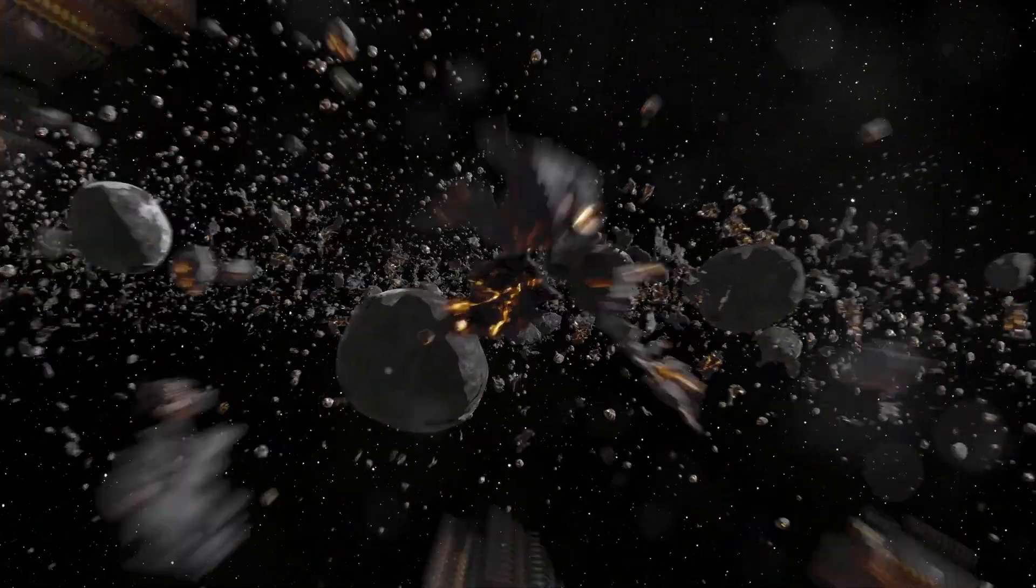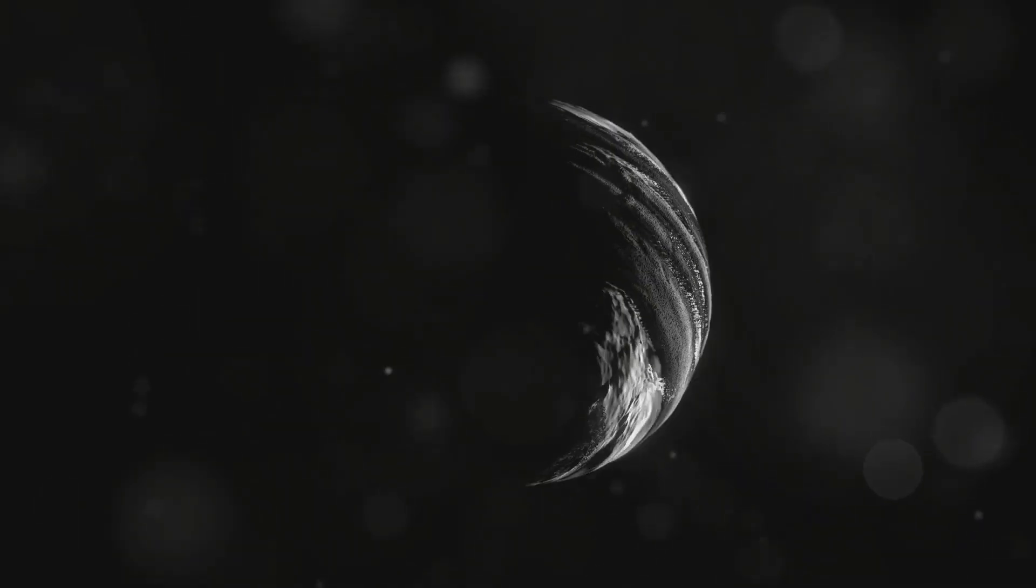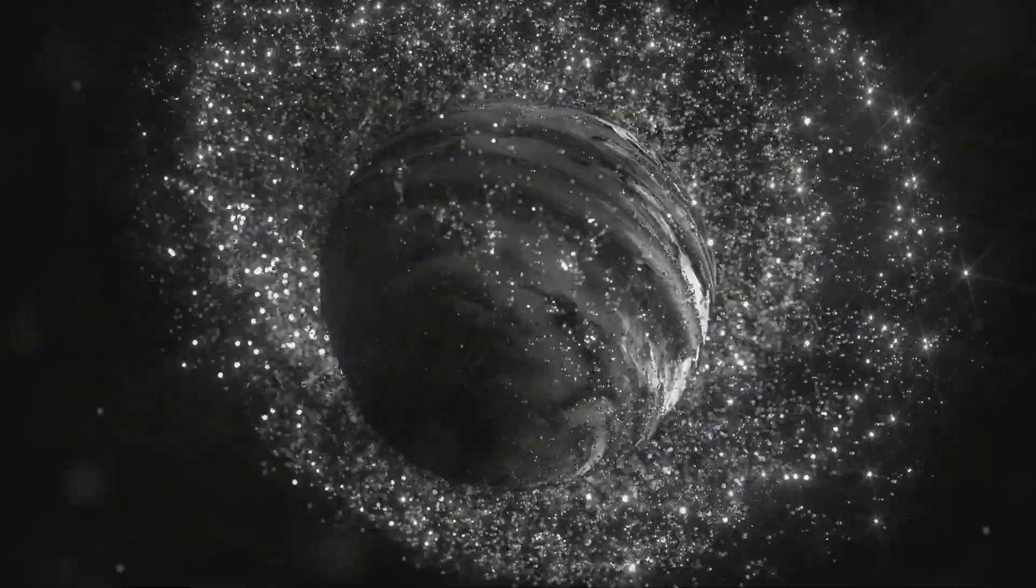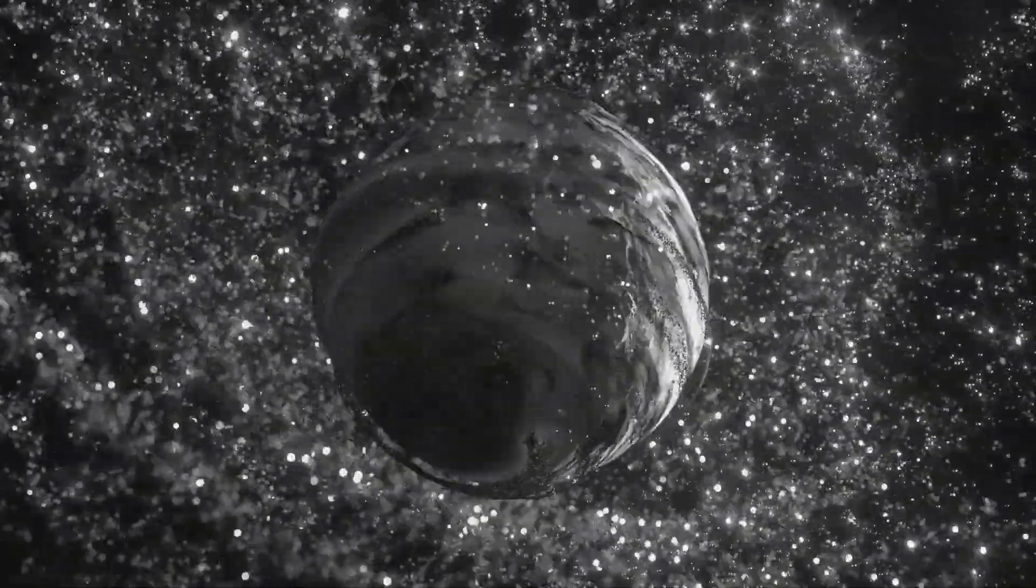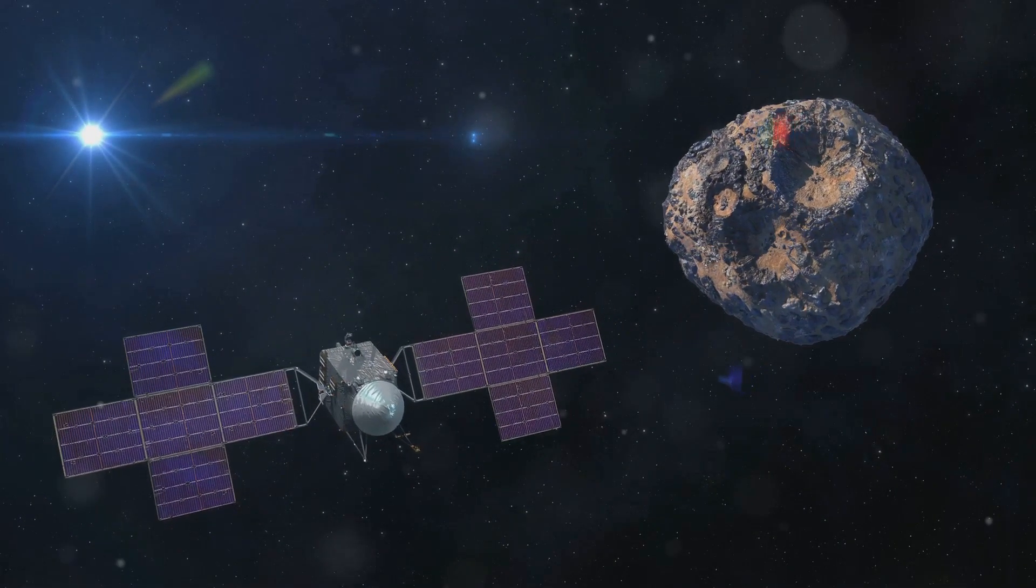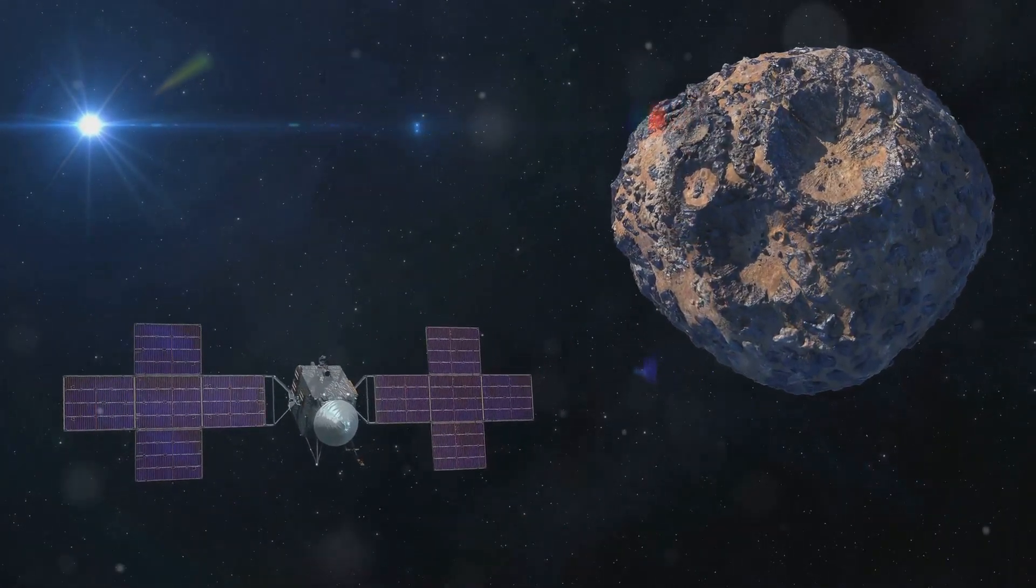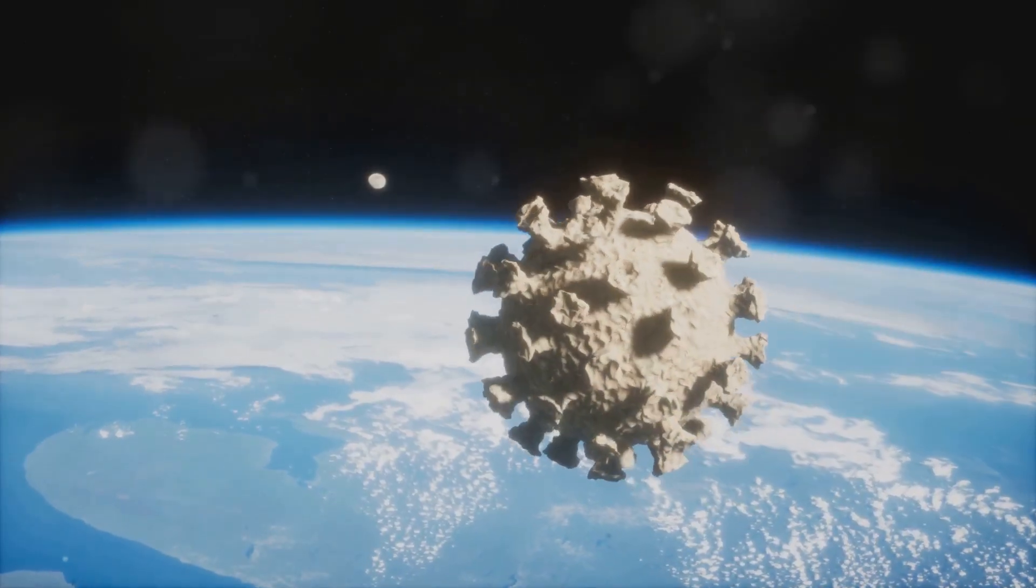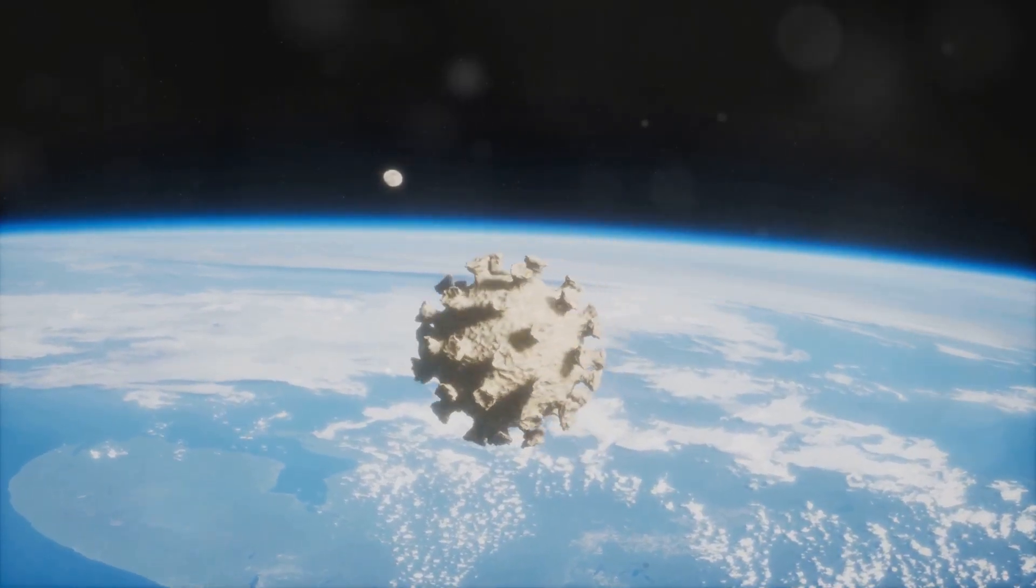So where does Psyche fit into this cosmic drama? If we follow this theory, the asteroid belt could very well represent the scattered remnants of what might one day be our planet. Psyche, with its rich metallic composition, could be remembered as the life-giving heart of Earth. The core that once pumped molten life blood, seeding the conditions necessary for life as we know it.